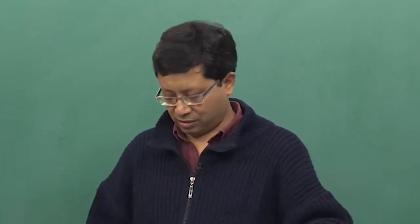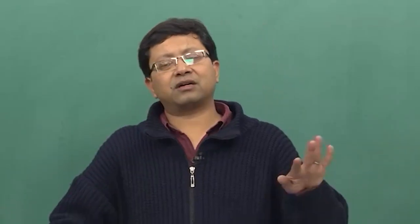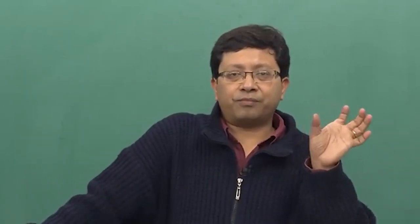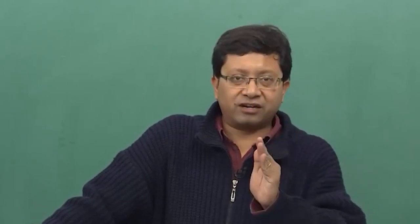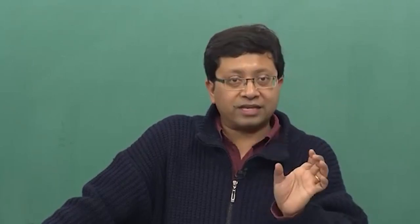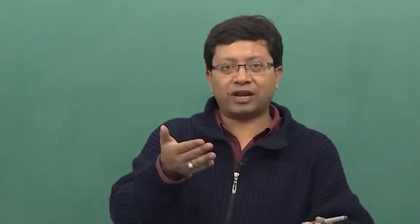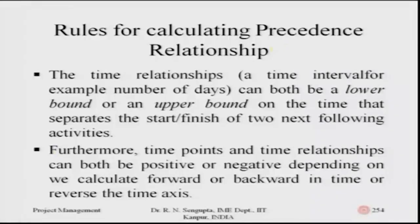The time interval between two jobs can be both a lower bound and an upper bound, based on which calculations are done. The forward and backward pass methods aim to find the earliest possible start and the latest possible finish for a job. For example, if the earliest start is day two and the latest start is day eight, with a duration of four days, there would be some leeway in scheduling.